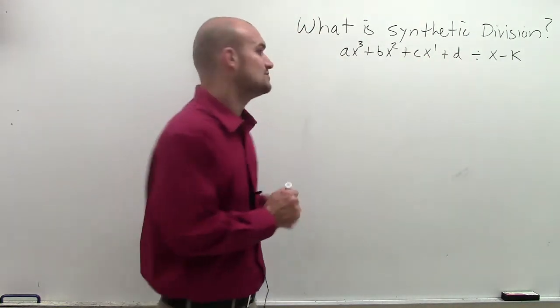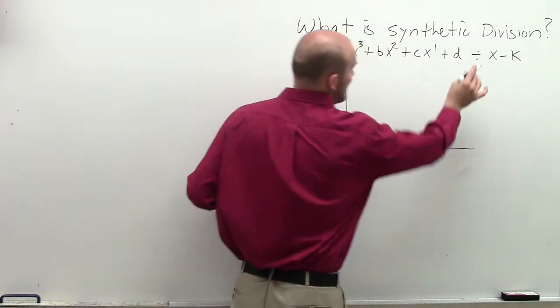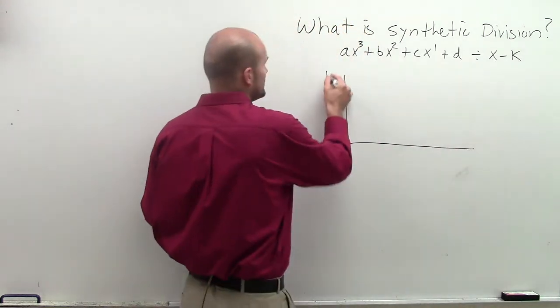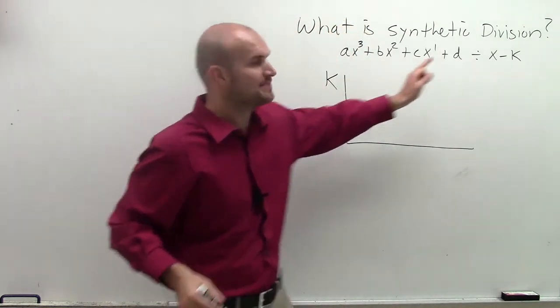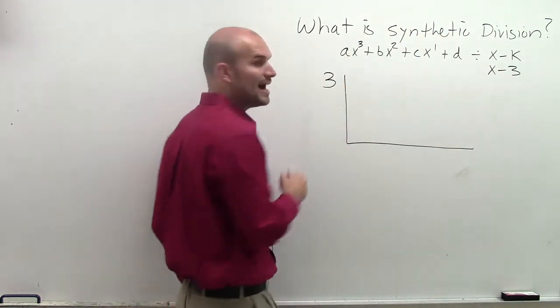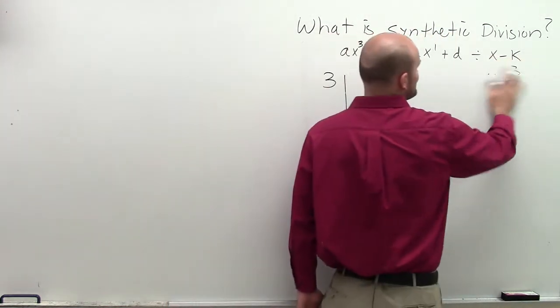Now, what we're going to do is we're going to take the value of k. Now, remember, it's x minus k. So the actual value of k is just going to be the opposite value. So here's an example. If I said x minus 3, my k would be positive 3. You're going to be taking the opposite value.